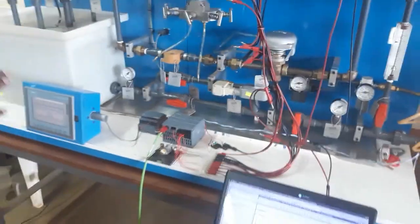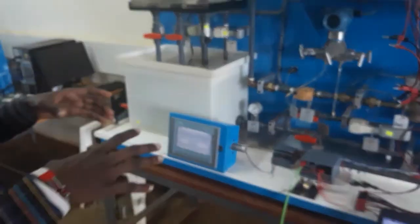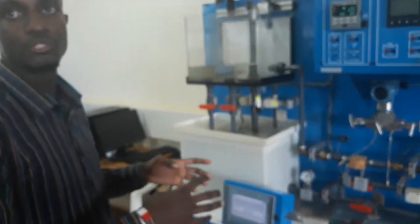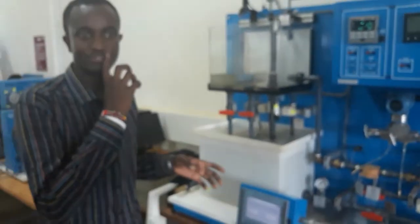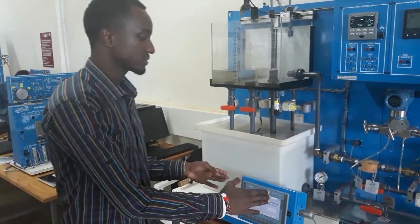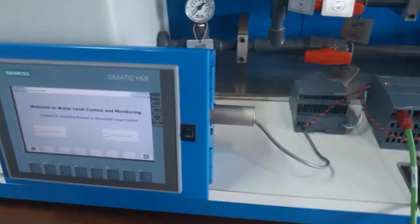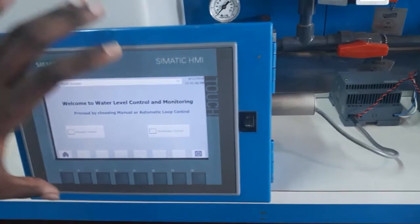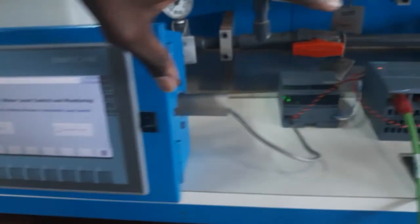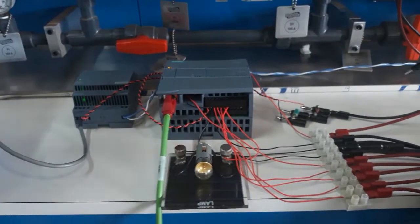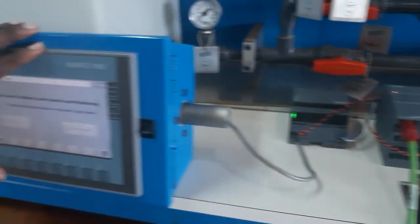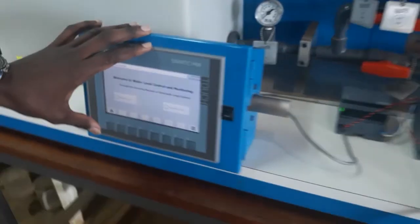After we are done with the PLC part, we have designed a control panel and monitoring panel, which is the KTP700 Basic HMI, which can be seen from here. We have interfaced the HMI with the PLC S7-1200 for ease of use.